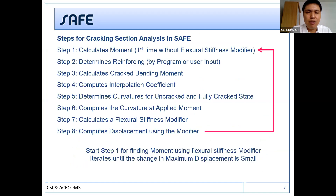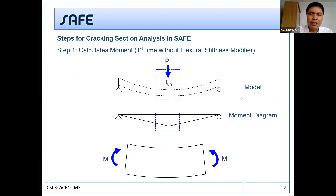This is the step-by-step for crack-section analysis in SAFE — there are 8 steps. After finishing step 8, SAFE will start step 1 again and iterate until the deflection from the last step is very small compared to the previous iteration, like a loop. In step 1, the program calculates the moment. You have the model, you apply the load, and in the first step it uses the uncracked gross cross-section to get the moment.